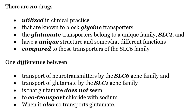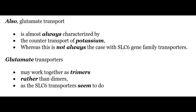There are no drugs utilized in clinical practice known to block glycine transporters. The glutamate transporters belong to the unique SLC1 family and have a unique structure and somewhat different action compared to SLC6 family transporters. One difference is that glutamate does not co-transport chloride with sodium. Also, glutamate transport is almost always characterized by the counter-transport of potassium, whereas this is not always the case with SLC6 transporters. Additionally, glutamate transporters may work together as trimers rather than dimers as in SLC6 transporters.